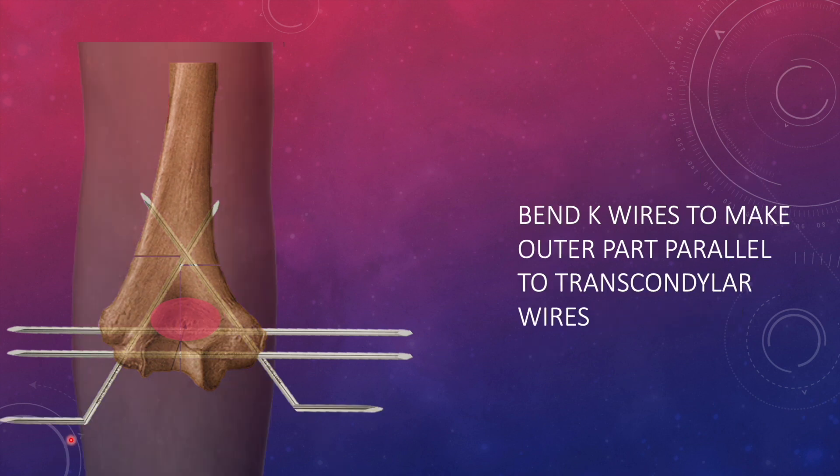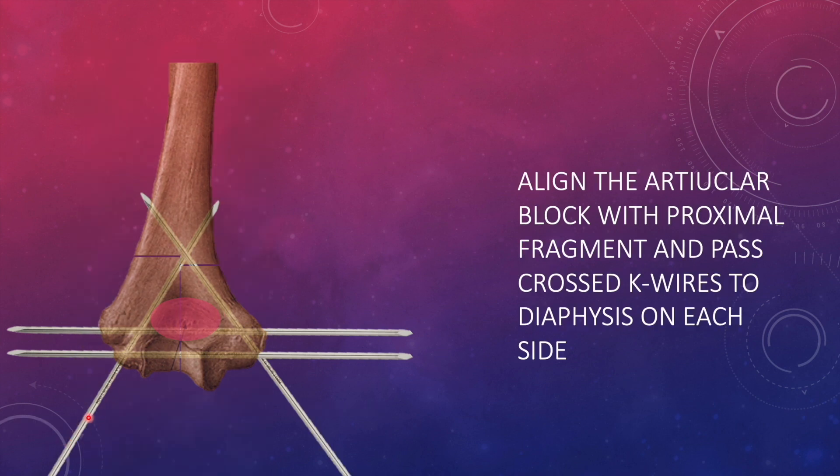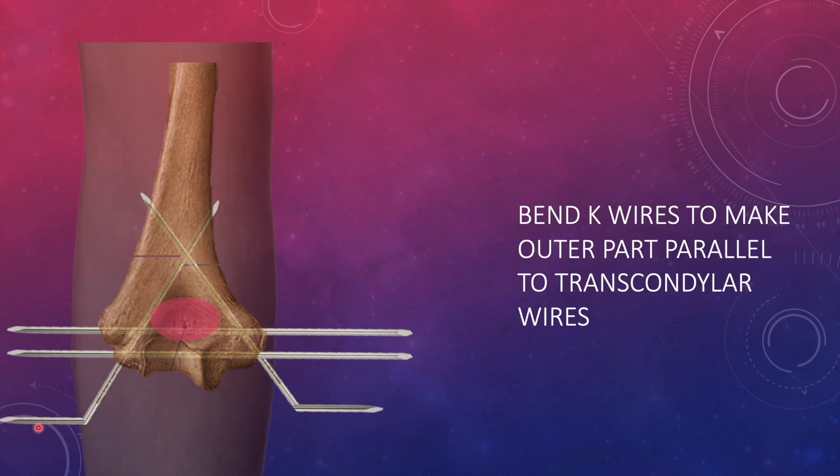Once that is done, you have to bend the terminal wire. The wire which was here, it has to be bent in line with the axis of the other transcondylar wires like this. Once that is done, then you are ready with your metaphyseal block.